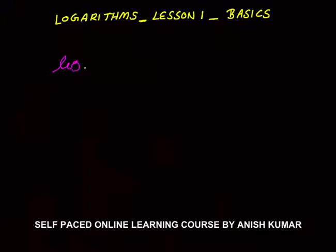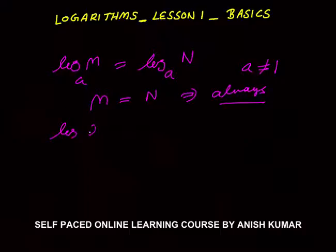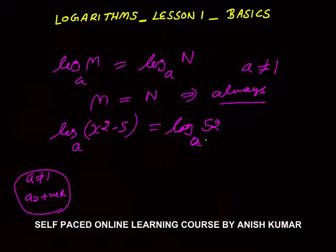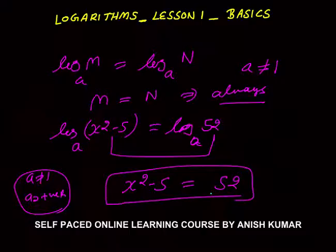Next: if log_a(m) = log_a(n), where a is a positive real number not equal to 1, then m = n. For example, if log_a(x² − 5) = log_a(52), where a is a positive real number other than 1, then you can directly say x² − 5 = 52. When the base is the same and not equal to 1 or negative, you can always equate the arguments.